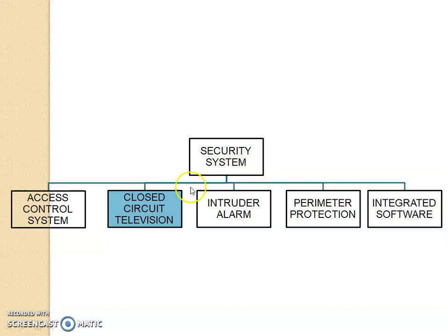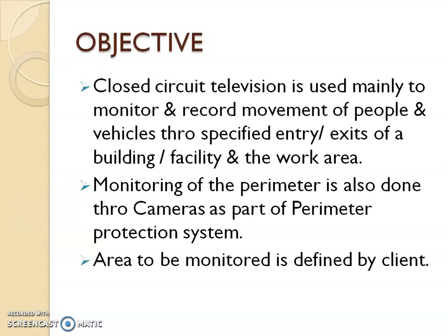The security system comprises of access control systems, CCTV, intruder alarm, perimeter protection, and integrated software. The CCTV is what I am going to take now and I will be taking it in two lecture modules. The main objective of CCTV is to monitor and record the movement of people and vehicles in the entry and exit of the building facility.